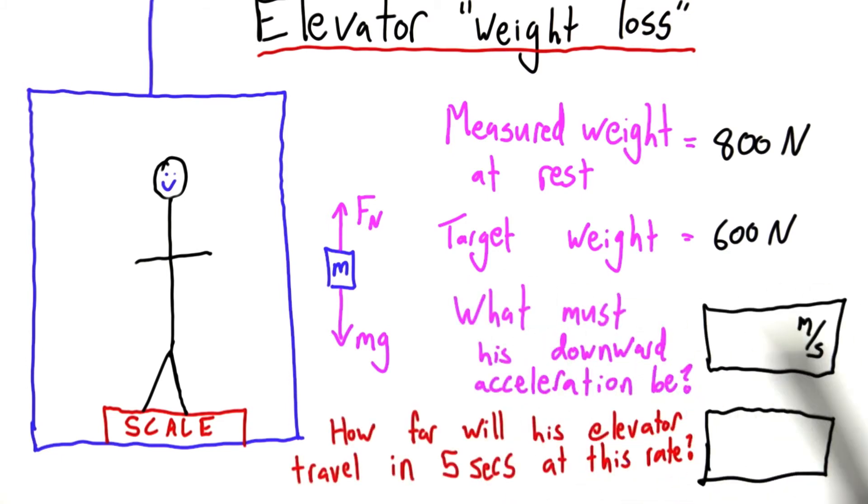Now I have two questions for you. First, what must his downward acceleration be to actually see this target weight of 600 newtons on the scale? Next, if he travels at that acceleration for 5 seconds, and assuming the elevator started at rest, how far will he travel? This is more of a review of unit 2. Enter your answers here and here.